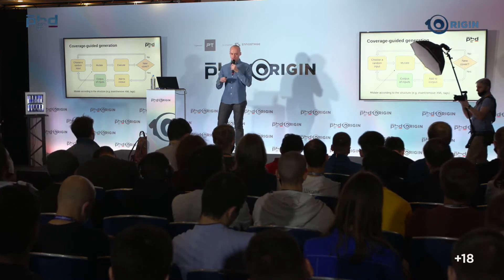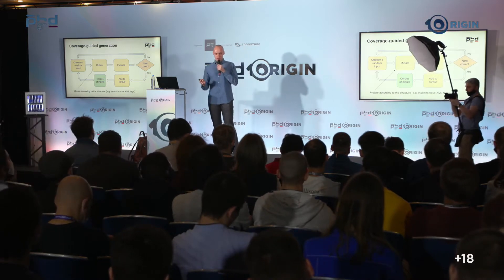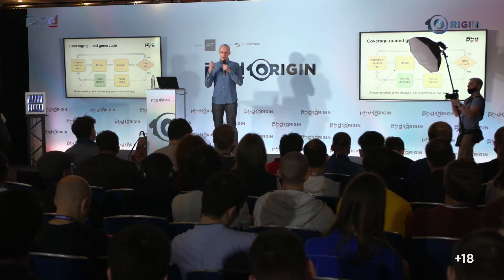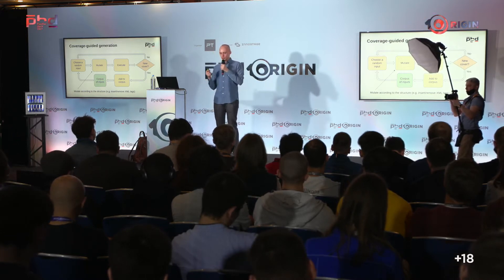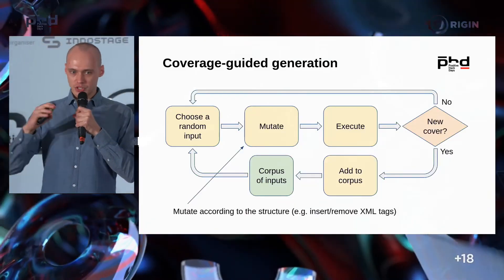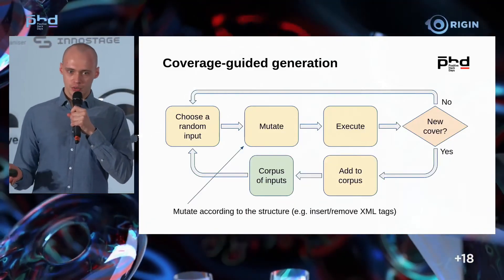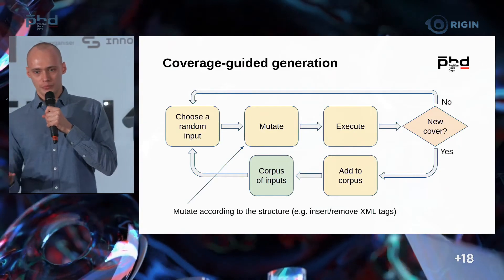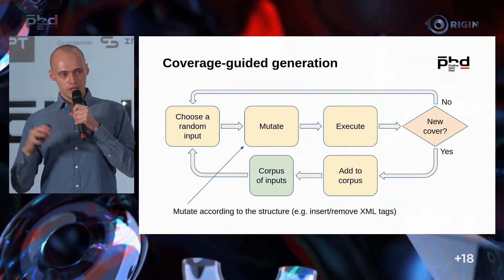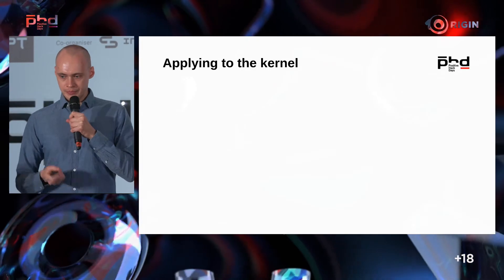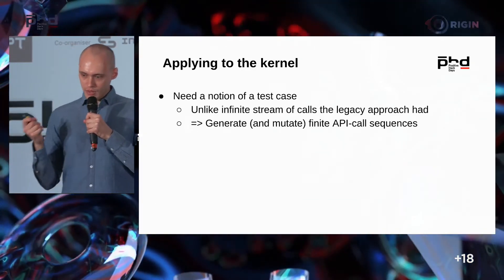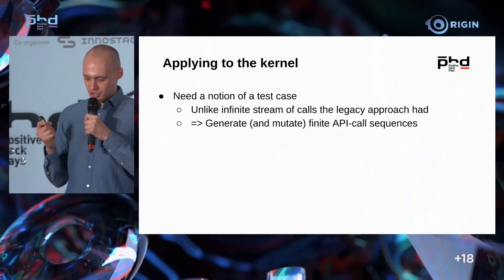When we mutate, we can combine the coverage-guided approach with the structured one discussed earlier. If we mutate a structure, we can do it not randomly but using logic — for instance, adding or removing fields from an array. Applying this to the kernel: in the coverage-guided approach, we need a single test case. As a test case, we don't take a single syscall but a sequence of syscalls, because some create resources and others use them.